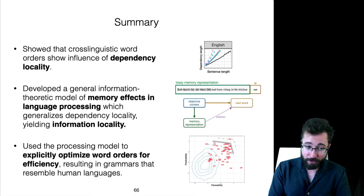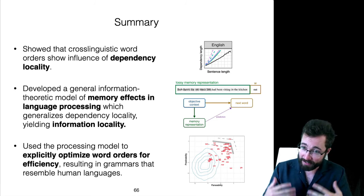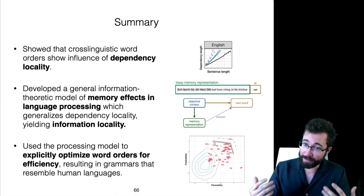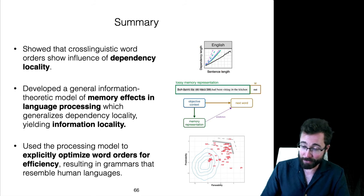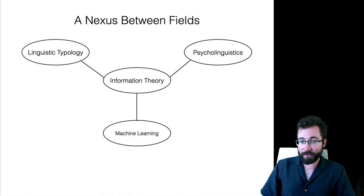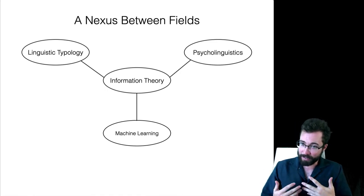Finally, we used that processing model as part of an explicit optimization process to find optimal word orders, and we found that those word orders have some of the distinctive characteristics shared with natural language word order grammars.